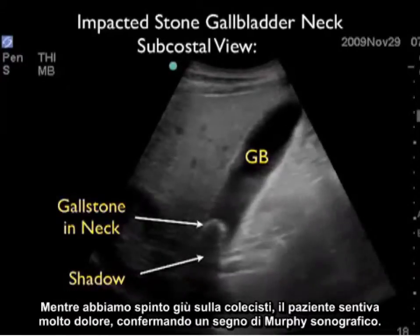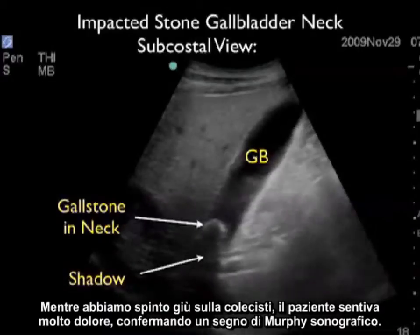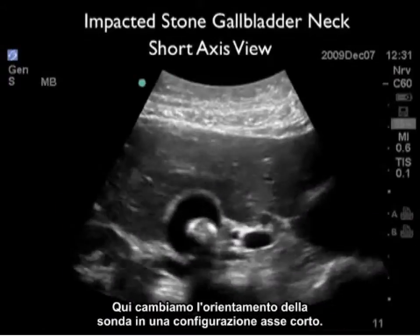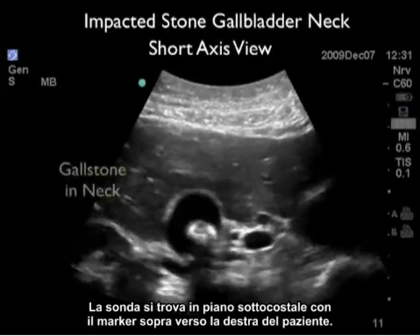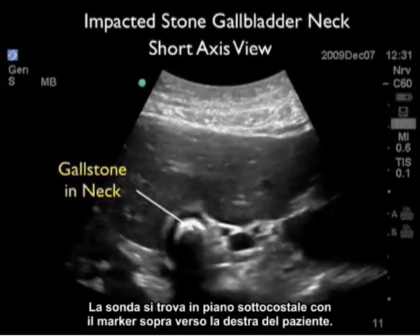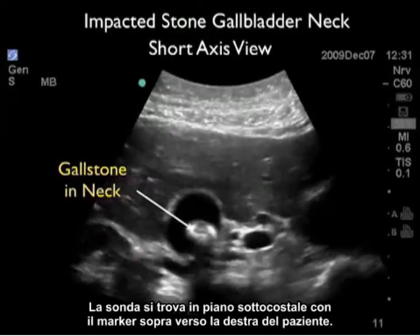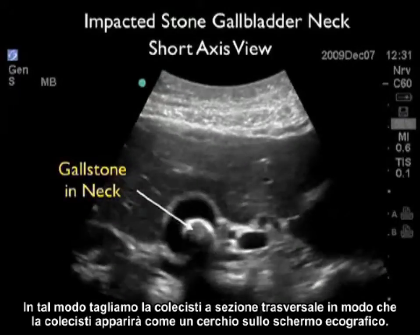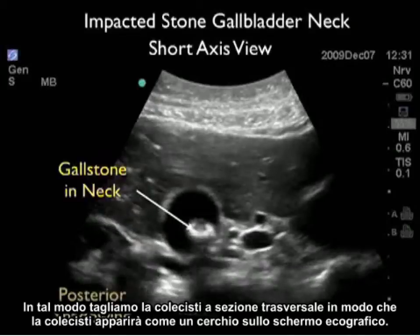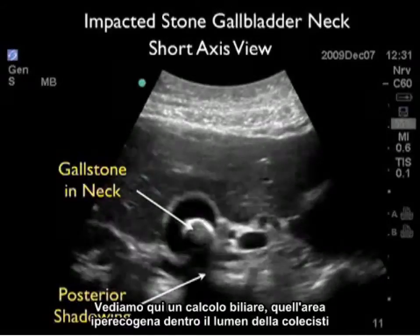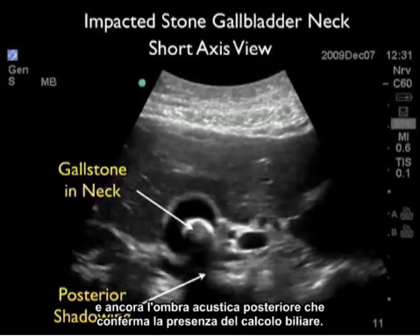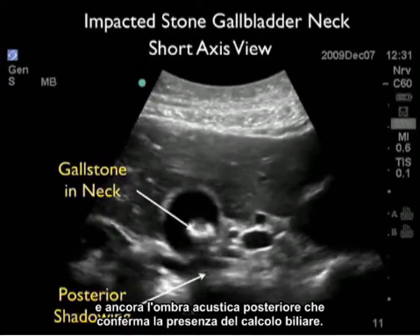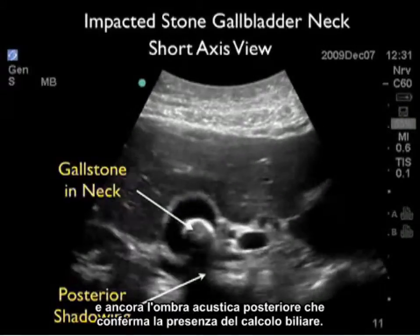As we pressed down on the gallbladder, the patient had significant pain, confirming a sonographic Murphy's sign. We then changed the probe orientation into a short axis configuration from the subcostal plane, cutting the gallbladder into cross sections so it appears as a circle on the ultrasound screen. We again see the hyperechoic gallstone within the gallbladder lumen with posterior acoustic shadowing confirming its presence.